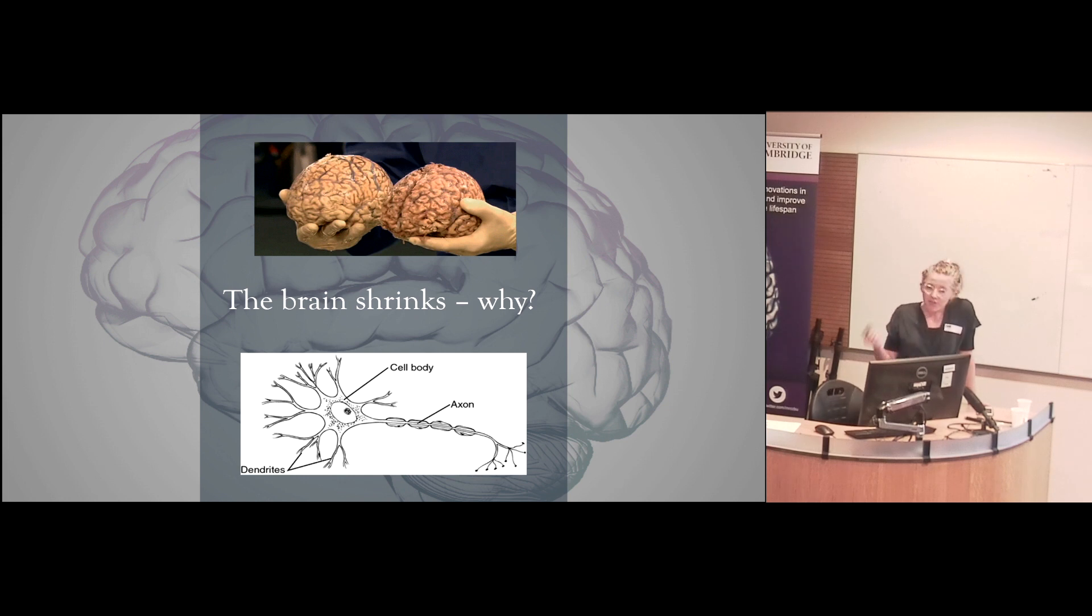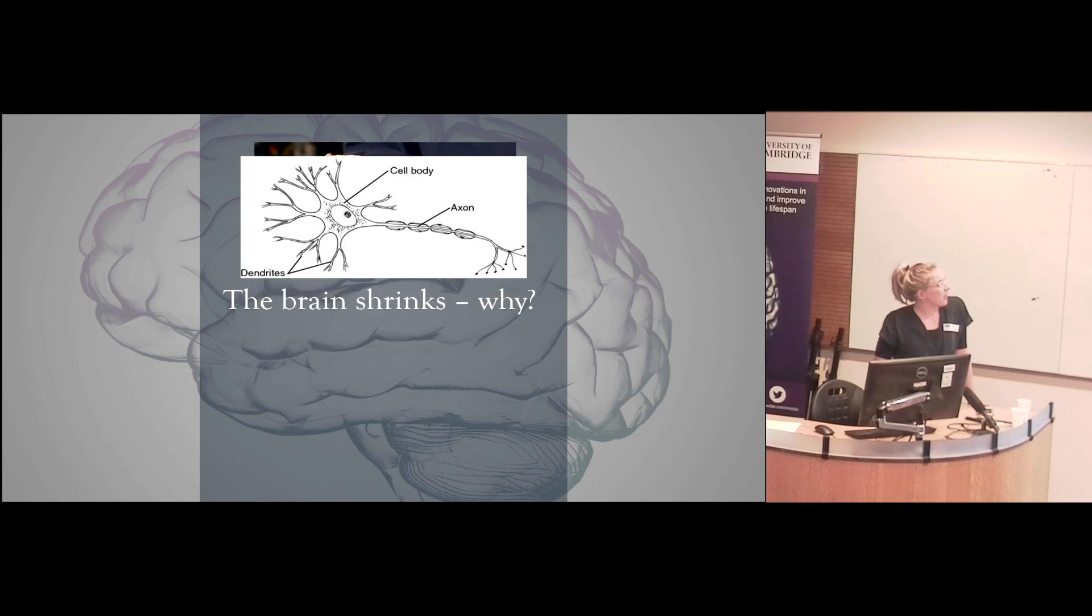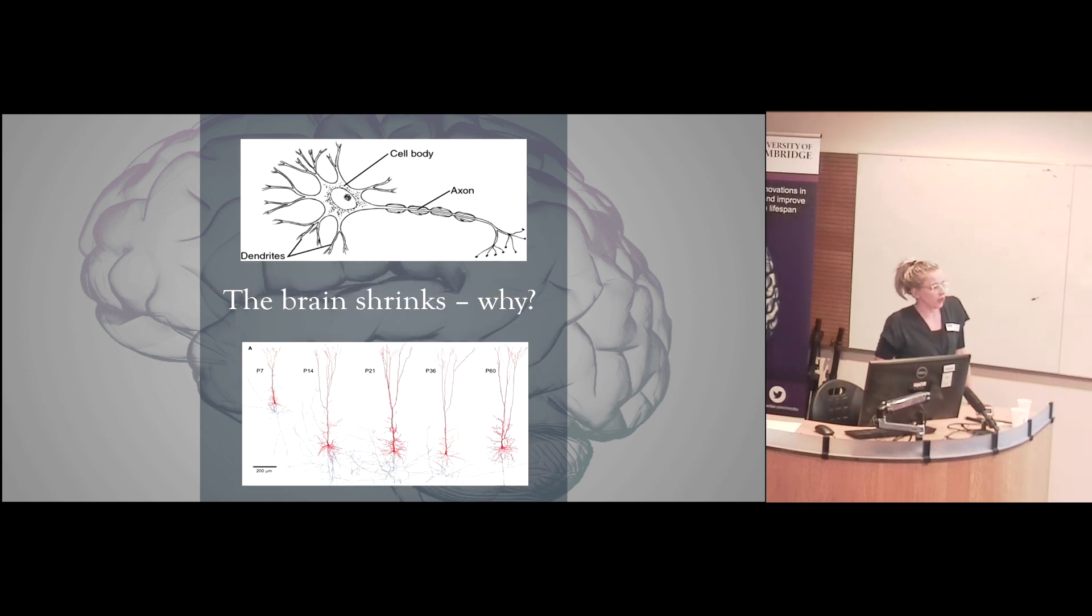So as I said, people used to think that the brain shrinks because the cells die, but actually, it seems to be something else. So what you can see here is an actual neuron of a rat's brain, so a child rat, an adolescent rat, an adult rat, an old rat. Here is the cell body, the axon, and down here are the dendrites. And you can see that as the rat ages, there are more dendrites, many more dendrites, but then the dendrites seem to disappear. And this is what we think is driving brain shrinkage. It's not necessarily that all the cells are dying, it's that there is a reduction in dendrites.